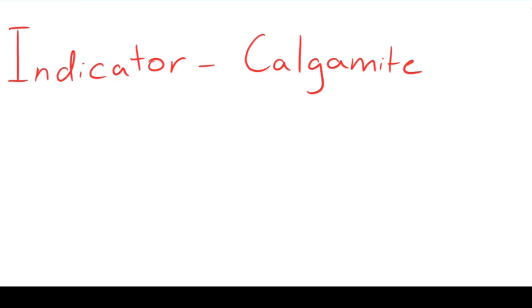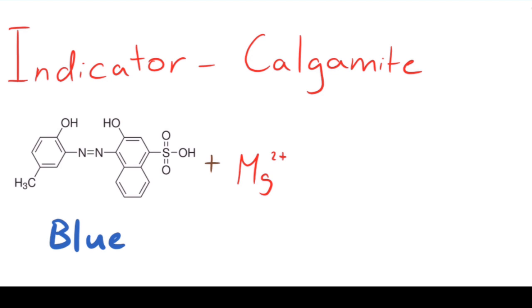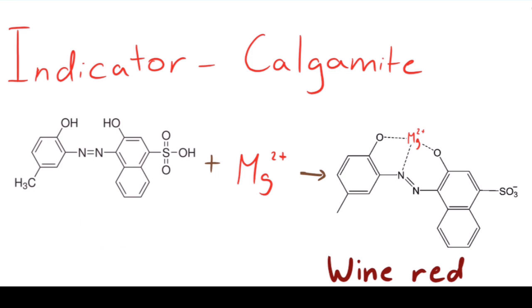We're also going to add an indicator, which is calgamite, which is colored blue. The indicator, once it binds magnesium, forms a wine red color, which we can see right after we add the indicator to our aliquot.